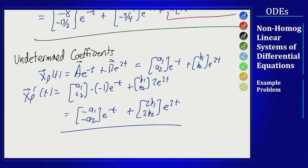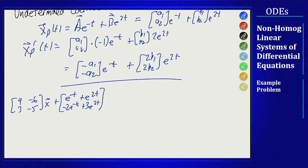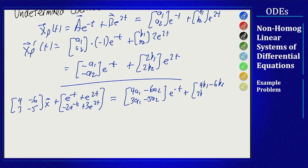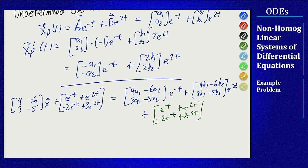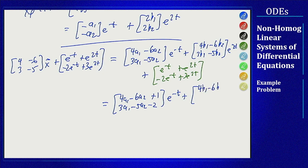The right-hand side of the equation is the coefficient matrix [4,-6; 3,-5] times x_p plus the forcing vector. Combining the matrix-times-guess terms with the non-homogeneous forcing gives: [4a₁ - 6a₂ + 1; 3a₁ - 5a₂ - 2]e^(-t) + [4b₁ - 6b₂ + 1; 3b₁ - 5b₂ + 3]e^(2t). Setting the derivative equal to this gives four equations in four unknowns.